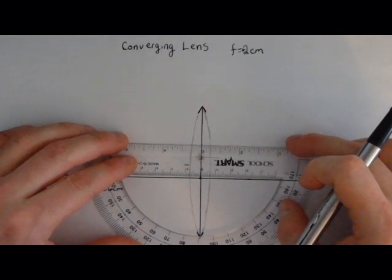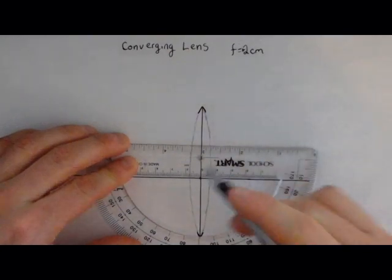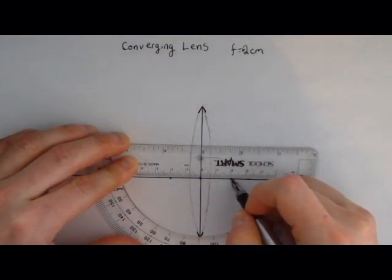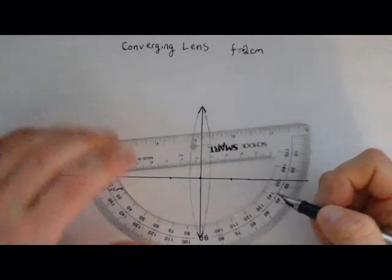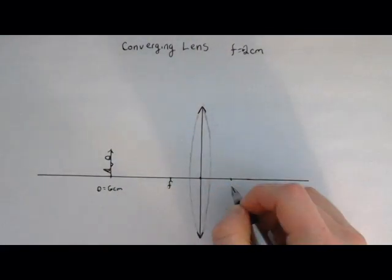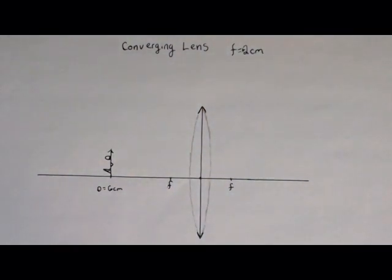It's going to be a positive focal length because our lens is converging. So I'll take my little protractor here, put the five in the middle of the lens. And then I'll have focal points at seven and three because those are two centimeters away and I'll label them with Fs. So now I've got my setup.